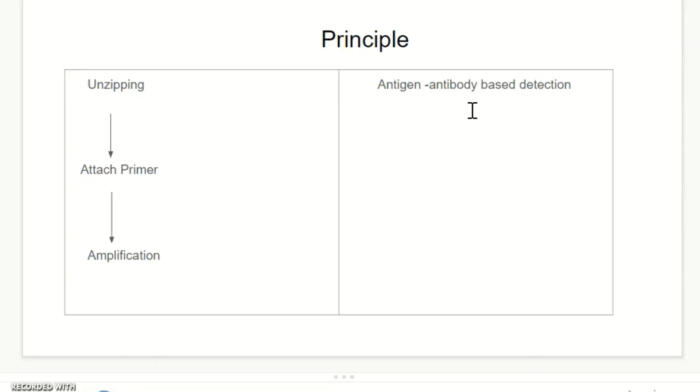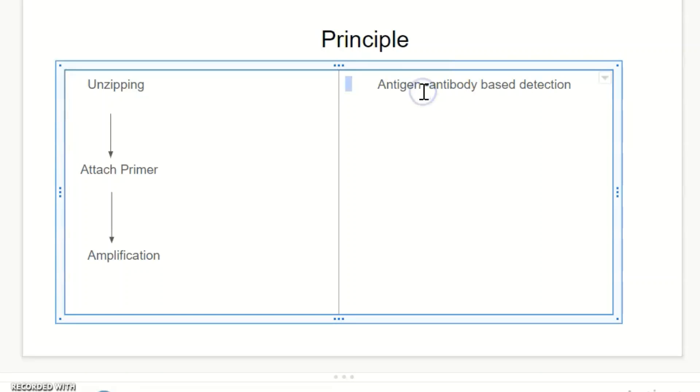Now let's take a look at the principle of ELISA. ELISA detects antibodies that are produced to attack the virus or bacteria. It does not detect the pathogen itself.